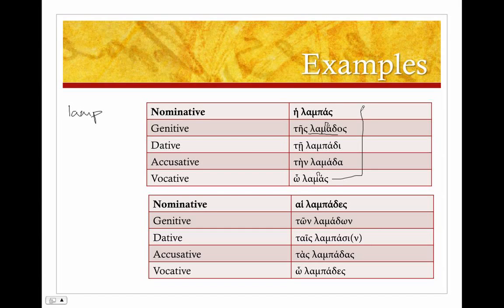Remember that in many cases the vocative is the same as the nominative. Plural: λαμπάδες, τῶν λαμπάδων (genitive), τῆς λαμπάσι - there's our dative plural, the trick that the delta has been eaten by the sigma. τᾶς λαμπάδας, ὦ λαμπάδες.